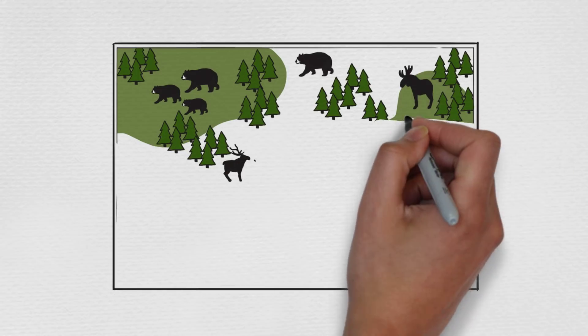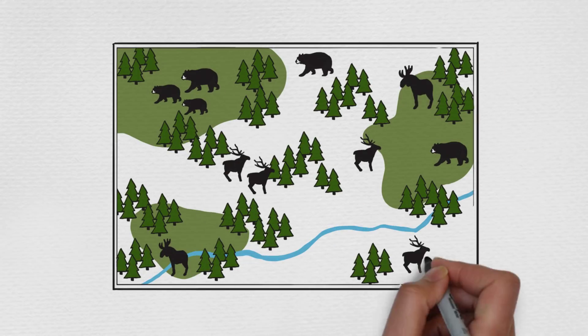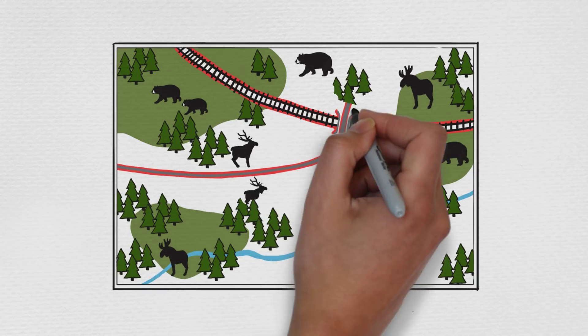When we cut up ecosystems into small, isolated patches, animals don't have enough space to migrate, mate, and find food.